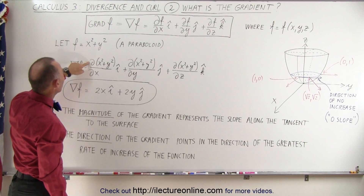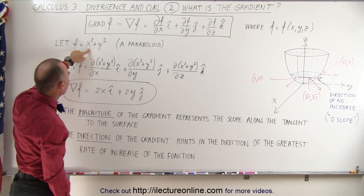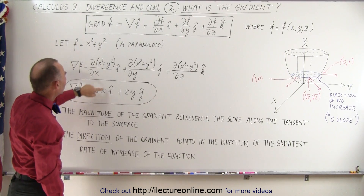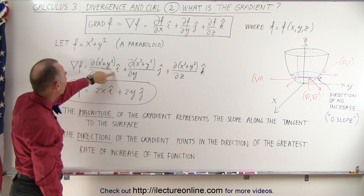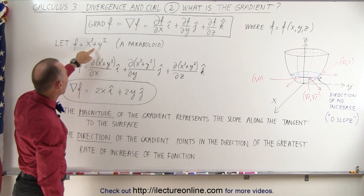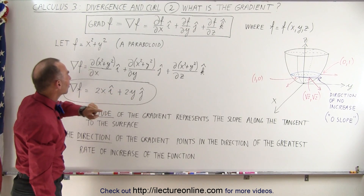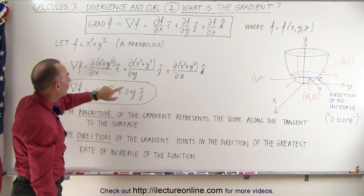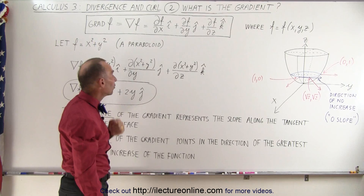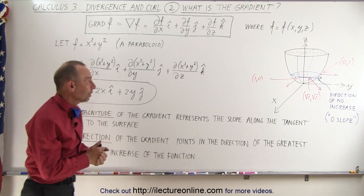We take the partial derivative with respect to x of x squared plus y squared, which gives us 2x in the i-direction. The partial derivative with respect to y gives us 2y in the j-direction. The partial derivative with respect to z is simply 0, so there is no k-component.